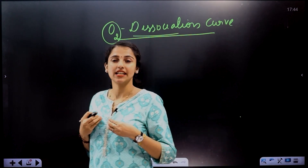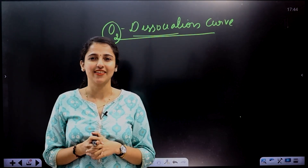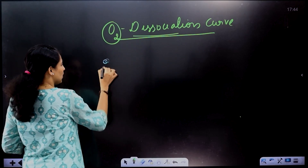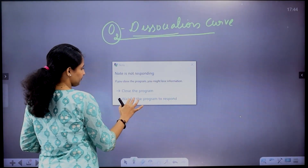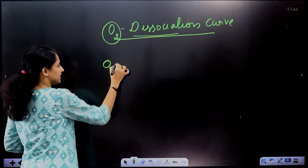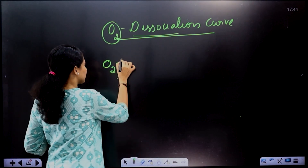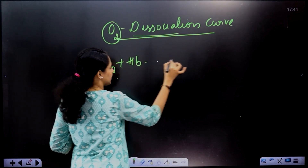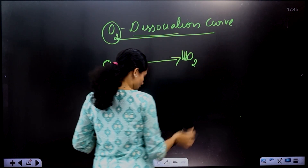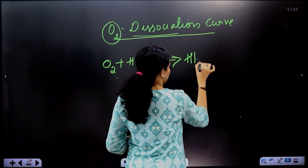When we talk about oxygen, we carry oxygen. How do we carry oxygen? Oxygen in the blood combines with hemoglobin. Oxygen combines with hemoglobin to form oxyhemoglobin.